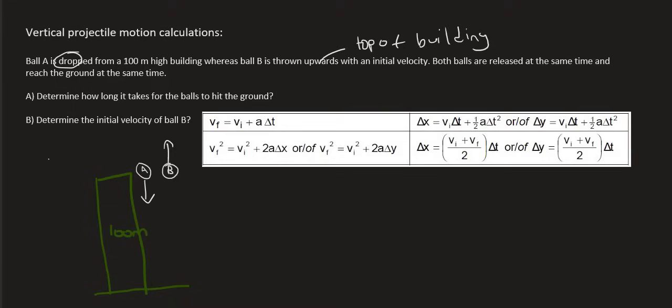It's 0 because they told us that it gets dropped. So I've got the initial velocity for ball A. I always have the acceleration. Remember that's 9.8. And I know the distance or the displacement.